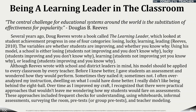Several years ago, Reeves wrote a book called The Learning Leader, which looked at student achievement progress in one of four categories: Losing, Lucky, Leading, and Learning. The variables are whether students are improving and whether you know why.